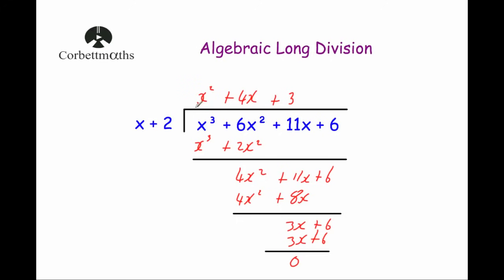So whenever we divide x cubed plus 6x squared plus 11x plus 6 by x plus 2, the answer is x squared plus 4x plus 3. Let's have a look at our next example.